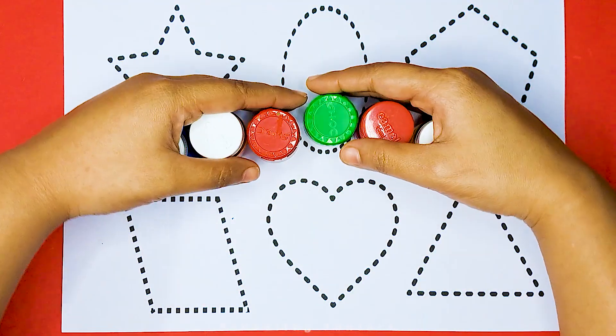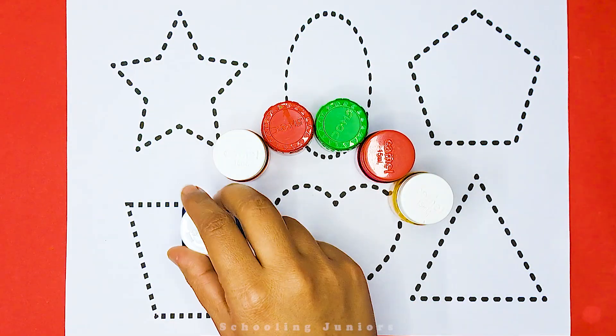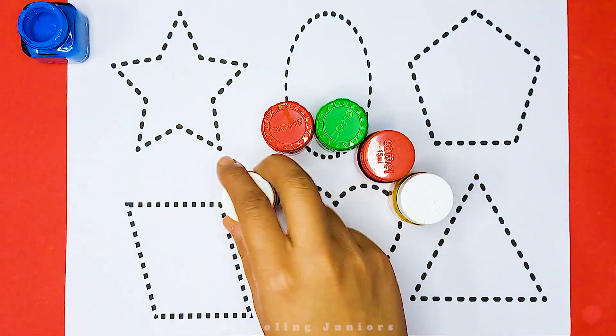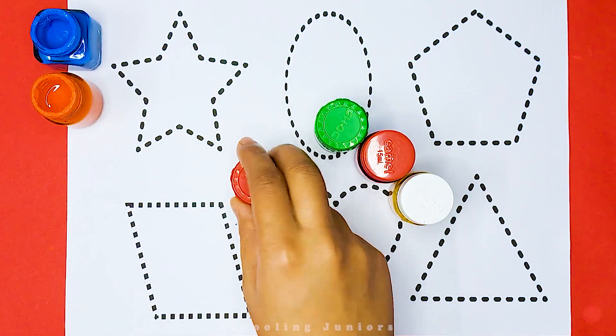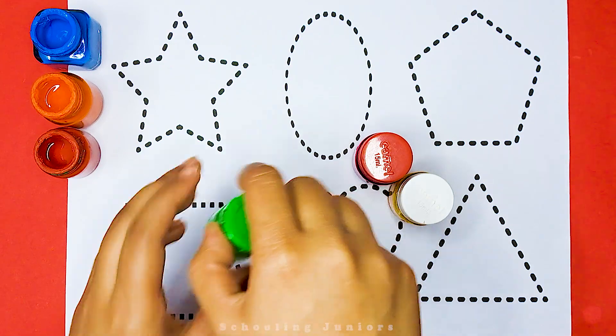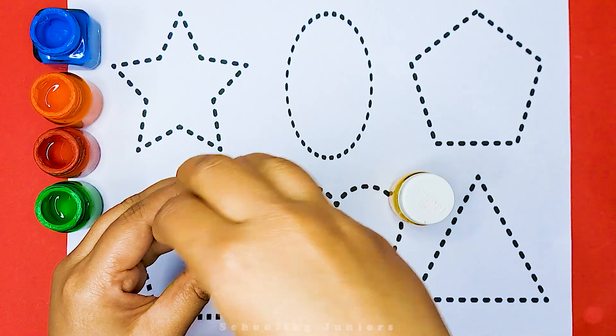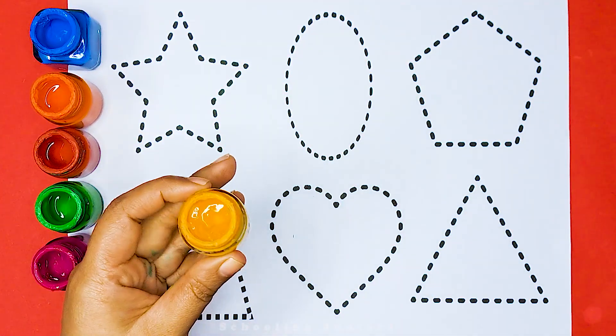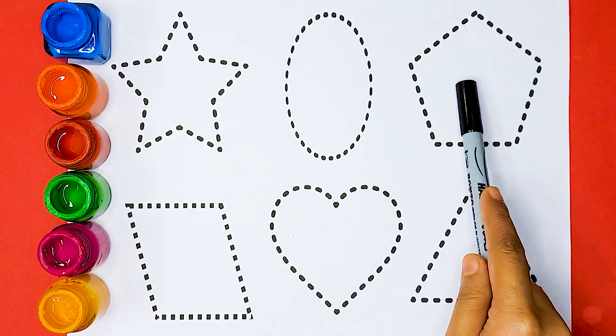So let's get started. This is our lovely colors. This is blue color. This is orange color. This is red color. This is green color. This is pink color. This is yellow color. Now let's learn to draw some 2D shapes.